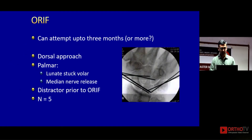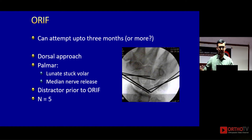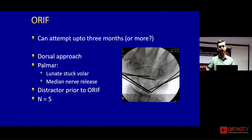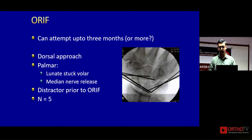Delayed presentation can be anywhere between four weeks, one month, three months, or six months. The younger the patient and the earlier you see them, you can do an open reduction and internal fixation. Always start with the dorsal approach — you can try to get everything back in place and fix as described. I open volar only if I'm unable to get the lunate back in place. I always start dorsal.